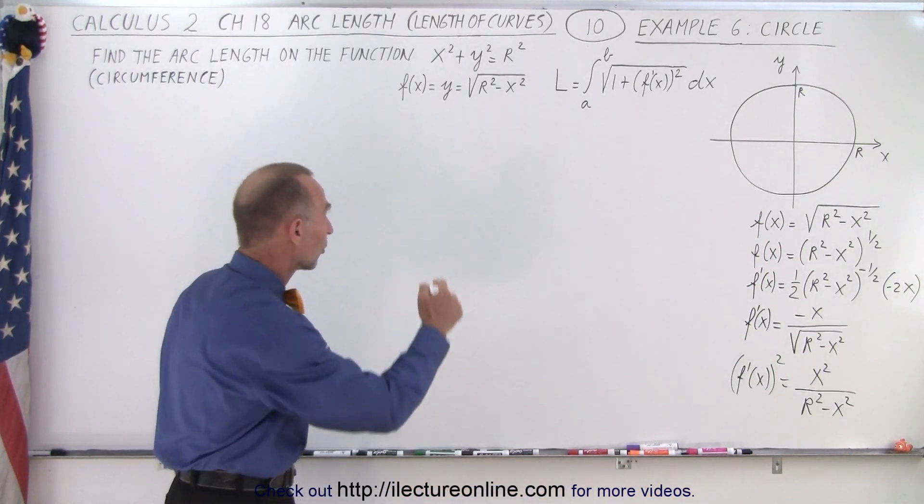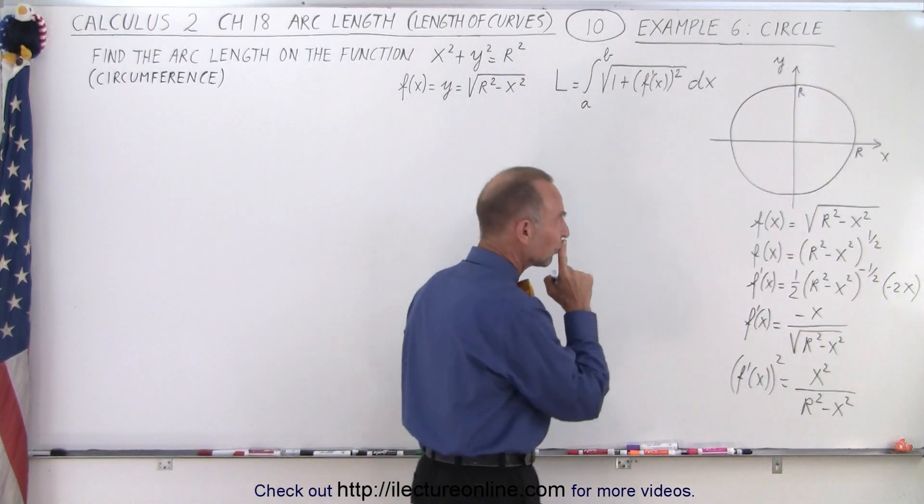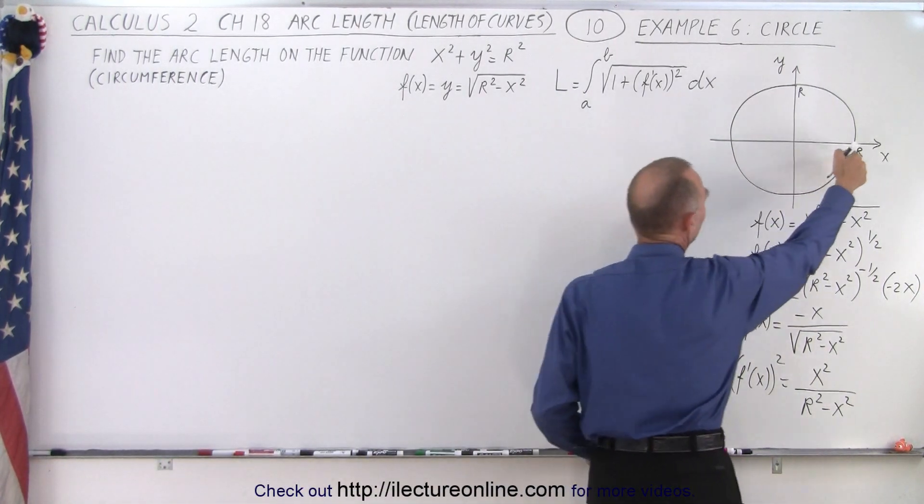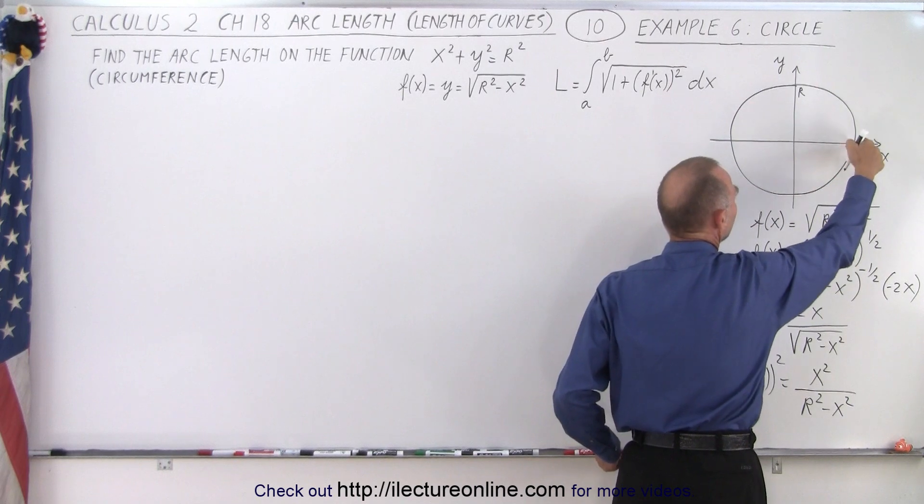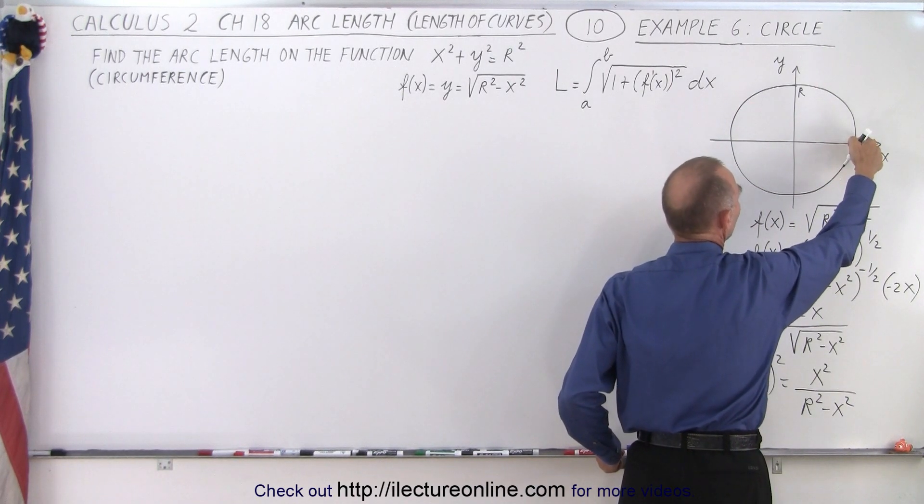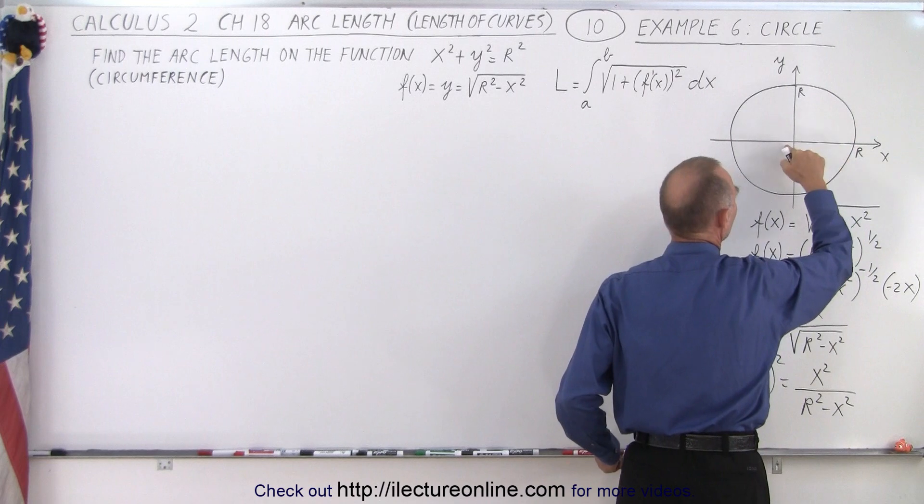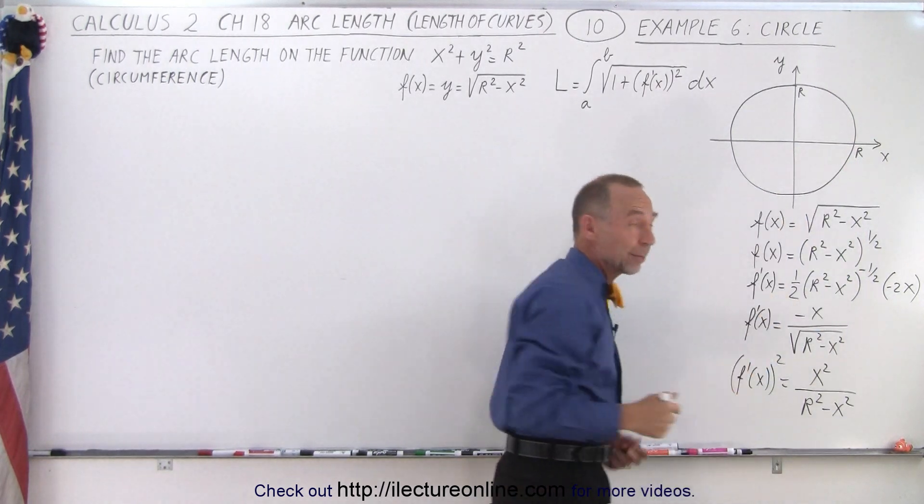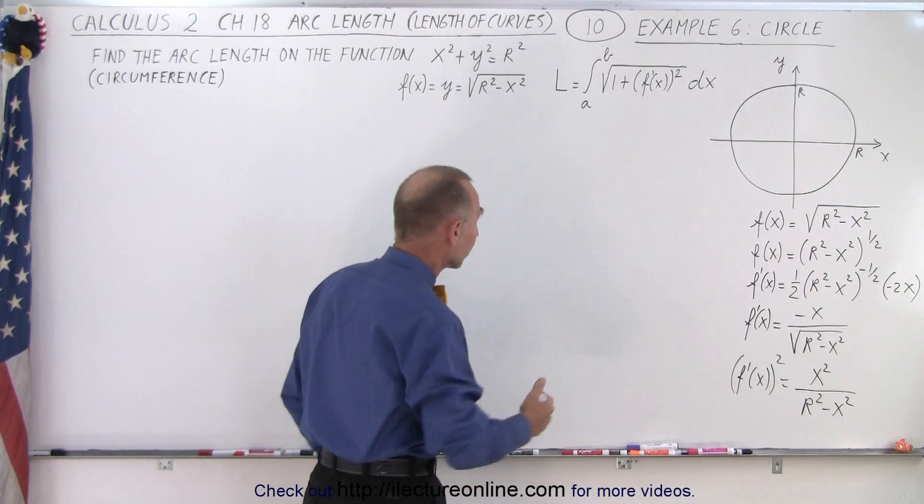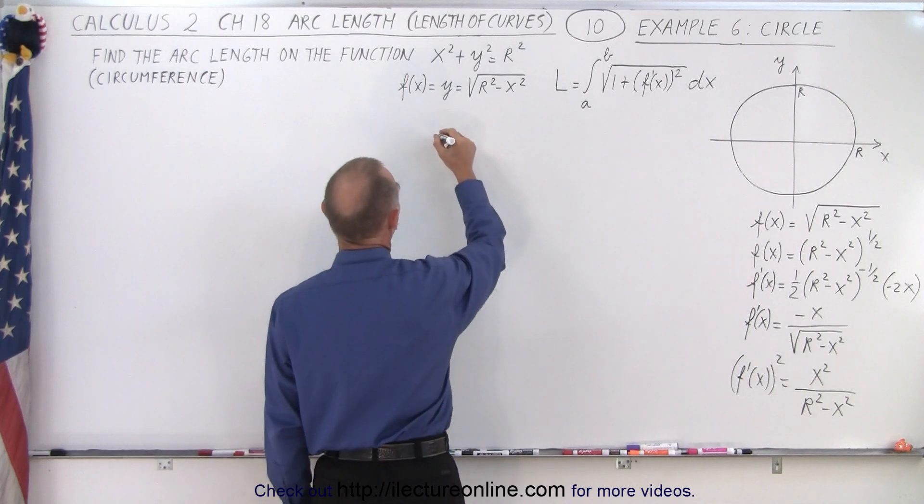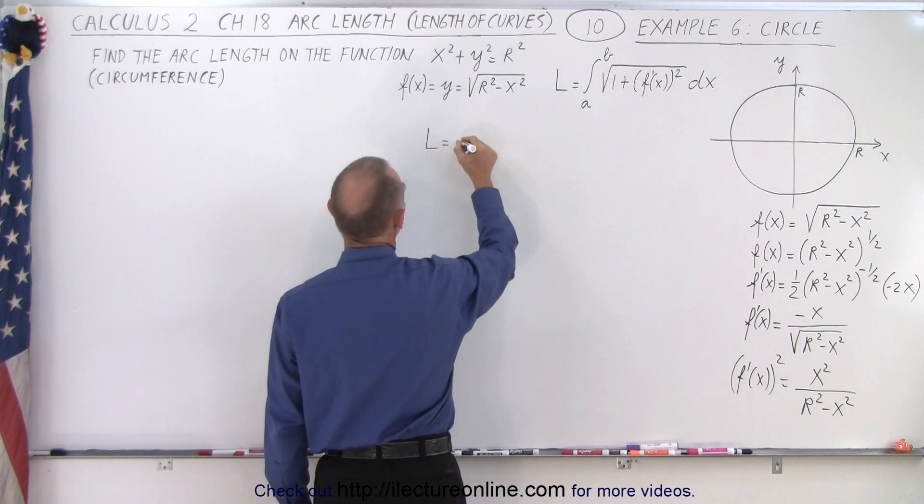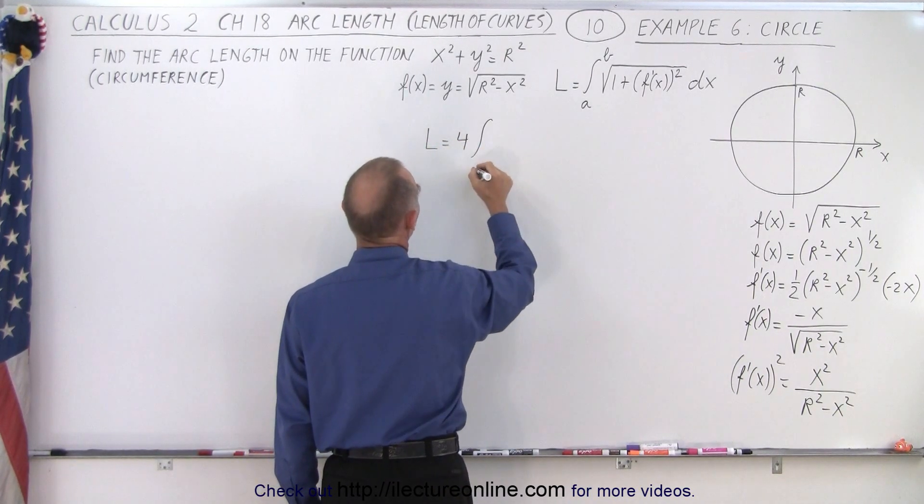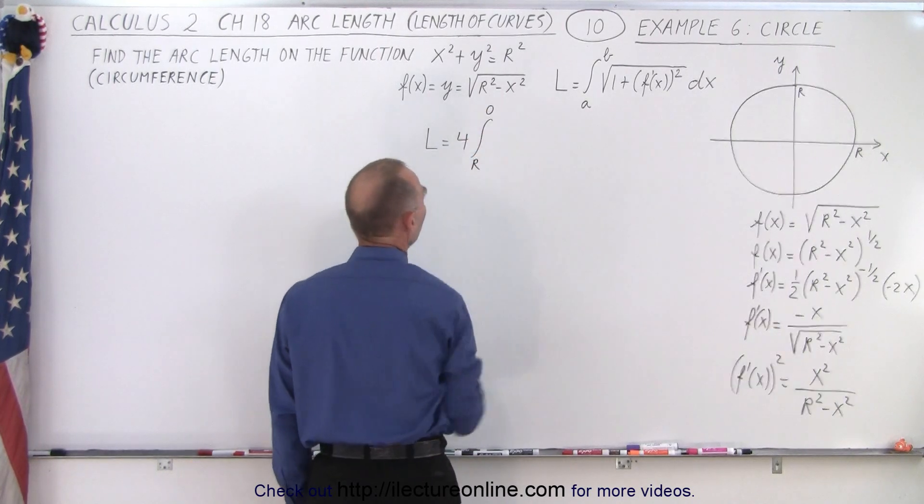Now that will go into our general formula. So now what we're going to do is we're going to integrate. Instead of going and integrate all the way around the circle, let's just go one quarter the distance from x equals r to x equals 0.